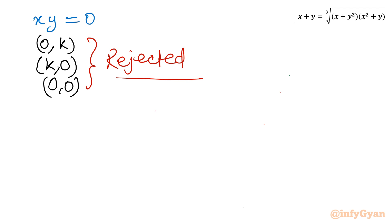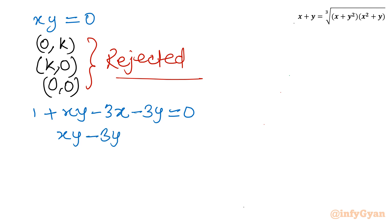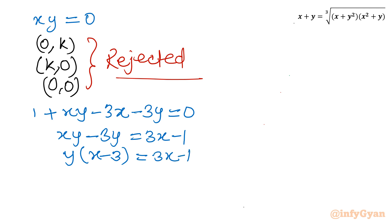Now let us consider the second equation: 1 + xy − 3x − 3y = 0. Rearranging, we get xy − 3y = 3x − 1. Dividing both sides by (x − 3), we obtain y = (3x − 1) / (x − 3), presuming x cannot equal 3.